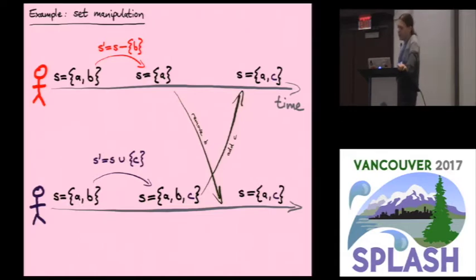There's a sensible convergent outcome here, which is to say that the b is removed, the c is added, the a is untouched. So the end result is the set consisting of a and c.